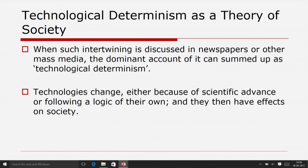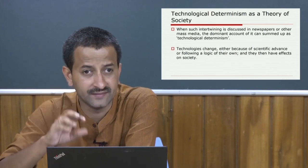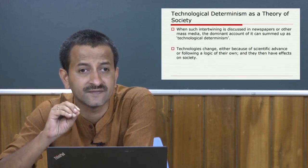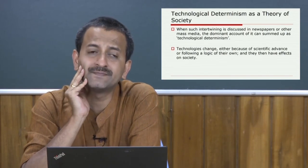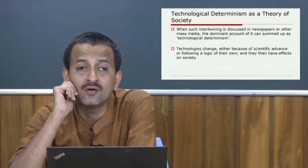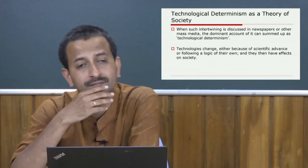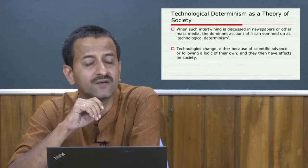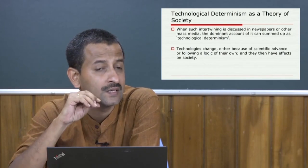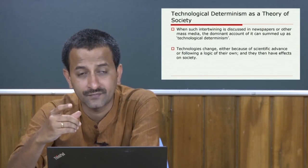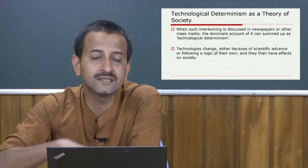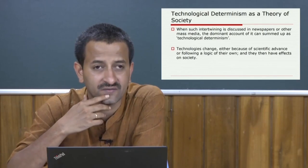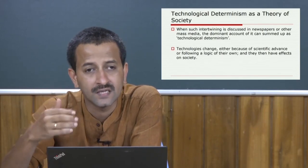This is technological determinism: technology changes our social, economic, political, cultural, and ideological formation. Technologies change either because of scientific advance or following a logic of their own, and then they have effects on society. If we say technologies develop on their own — that they have an internal logic of development — that is an internalist account of the development of technology. How technology may be conceived as influenced by external factors will be discussed in lectures to follow.